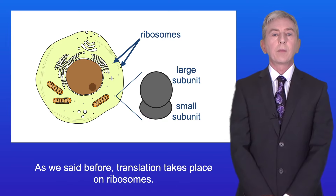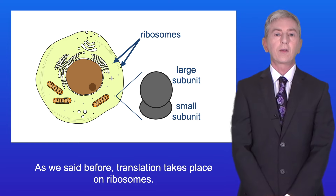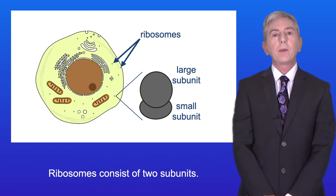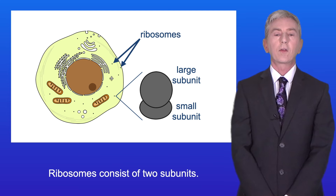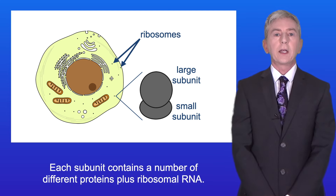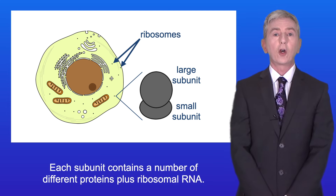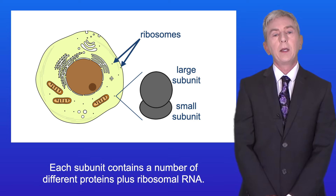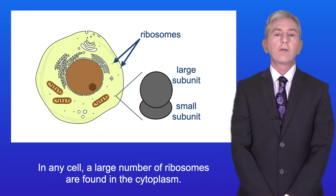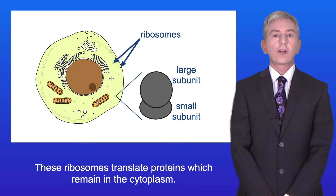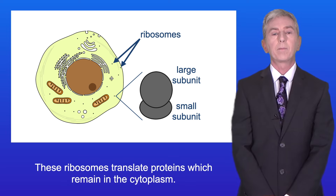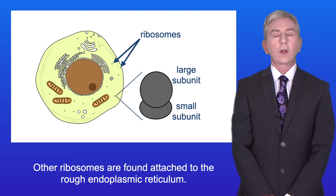As we said before, translation takes place on ribosomes. Ribosomes consist of two subunits, and each subunit contains a number of different proteins plus ribosomal RNA. In any cell, a large number of ribosomes are found in the cytoplasm — these ribosomes translate proteins which remain in the cytoplasm. Other ribosomes are found attached to the rough endoplasmic reticulum.